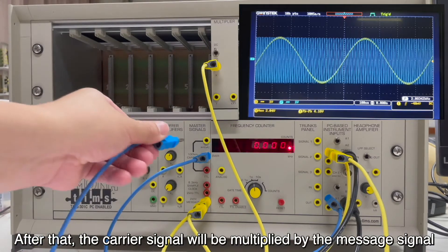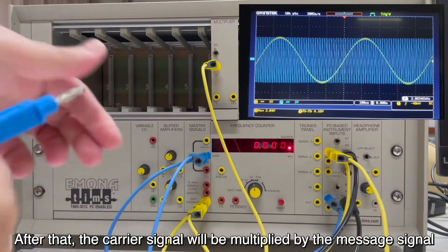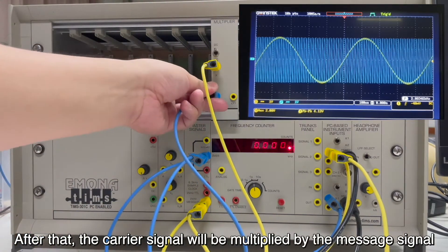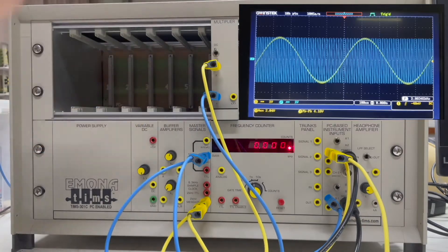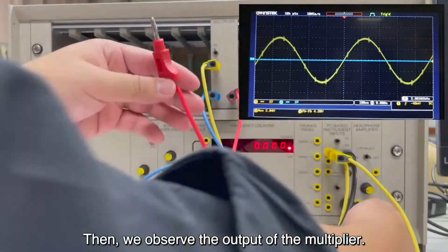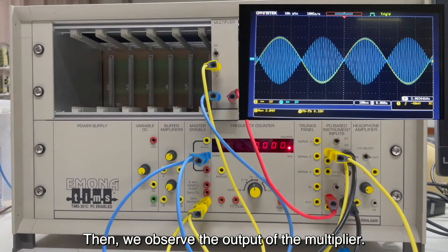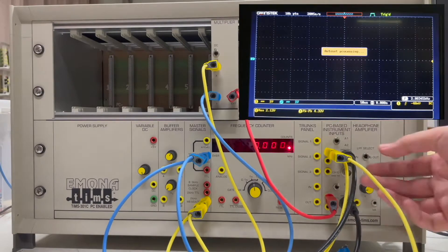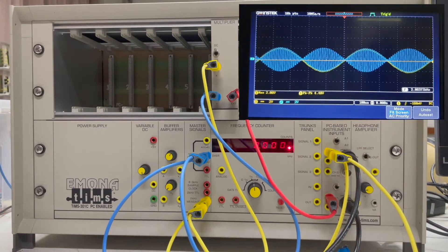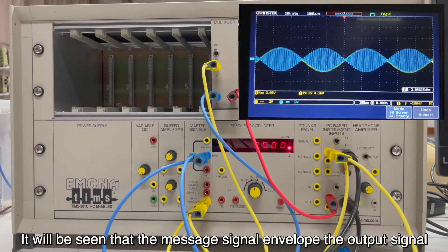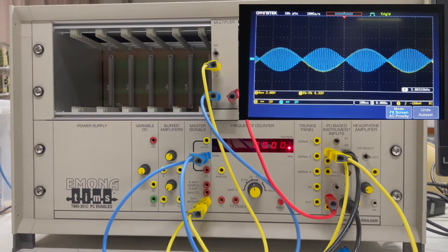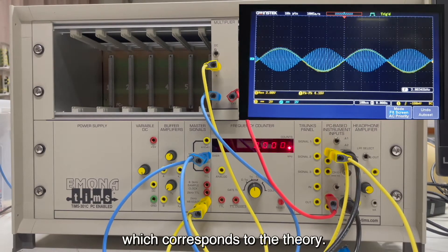After that, the carrier signal will be multiplied by the message signal. Then we observe the output of the multiplier. It can be seen that the message signal envelopes the output signal, which corresponds to the theory.